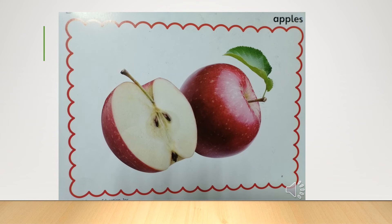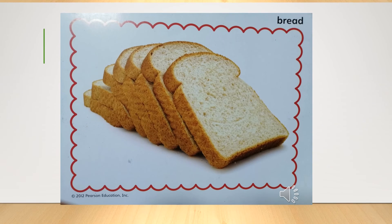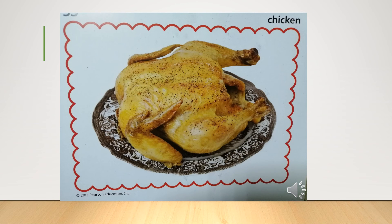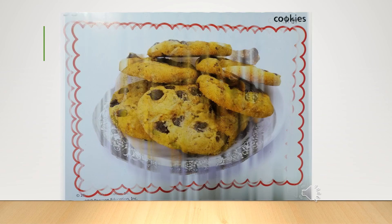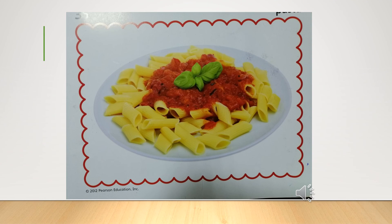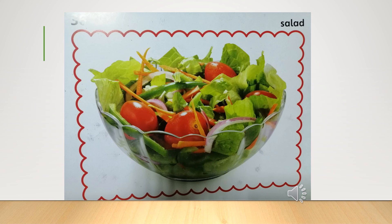Now I want you to repeat after me. These are apples. This is bread. This is chicken. These are cookies. This is cheese. This is pasta. And this is salad.